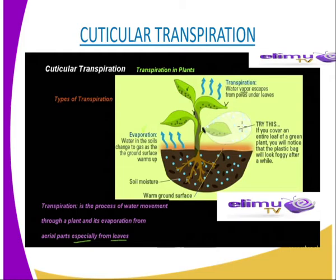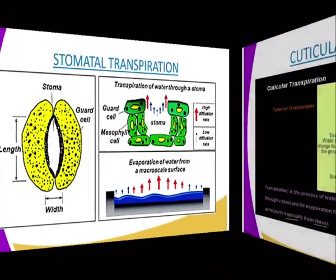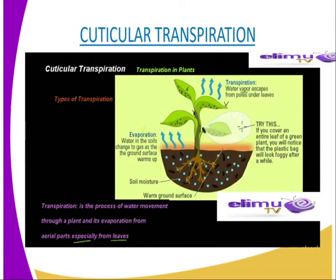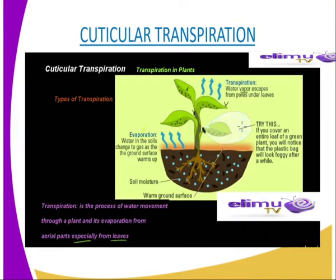This is the loss of water in the form of water vapour through the cuticle. Up to 20% of total transpiration may take place through the cuticle. In plants with thick cuticles, the loss is negligible. Remember, in stomatal transpiration we said 80 to 90% of water is lost through the stomata, whereas in cuticular transpiration it is only about 20%. So transpiration through the stomata is much greater compared to through the cuticles.